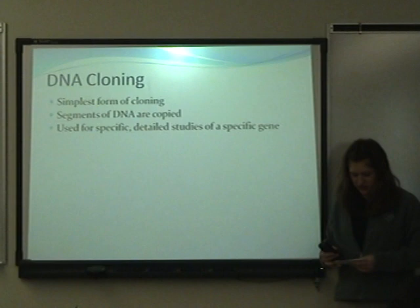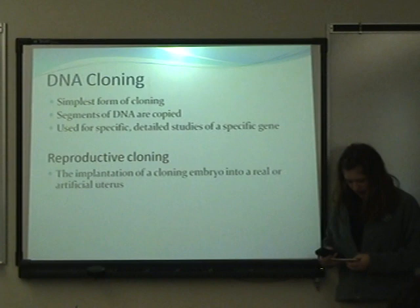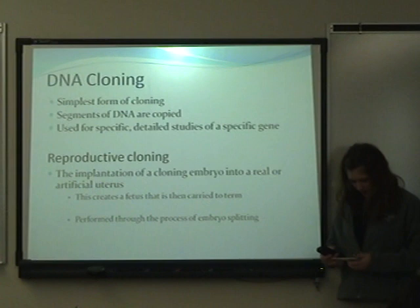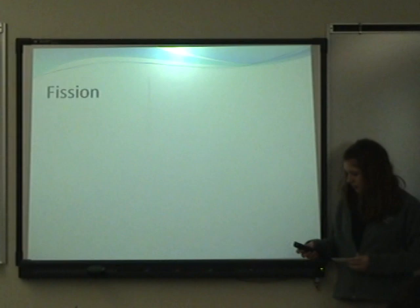Reproductive cloning is the implantation of a cloned embryo into a real or artificial uterus. This creates a fetus that is then carried to term, and is performed through the process of embryo splitting.